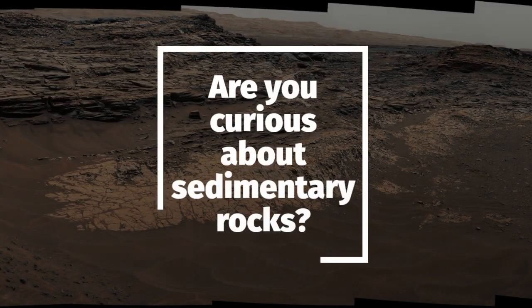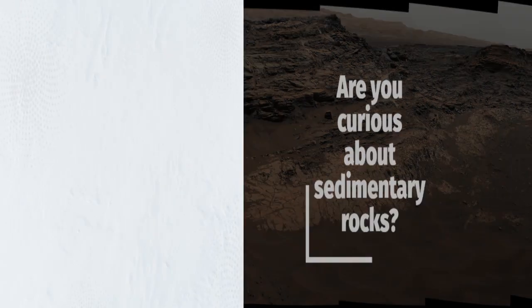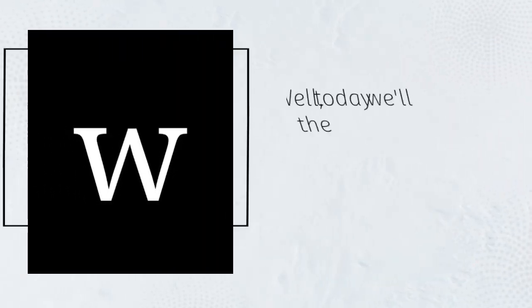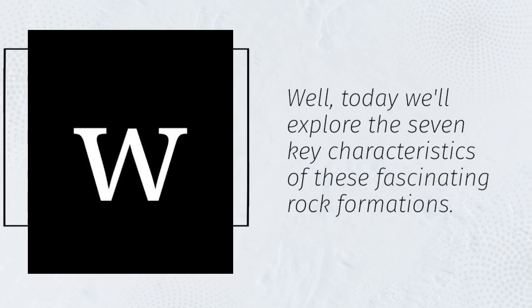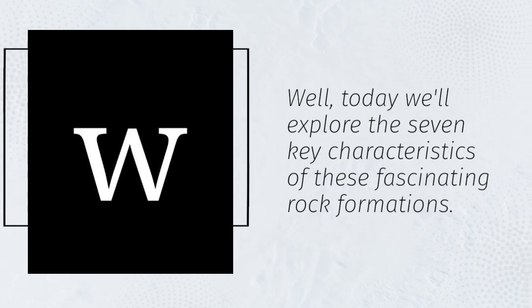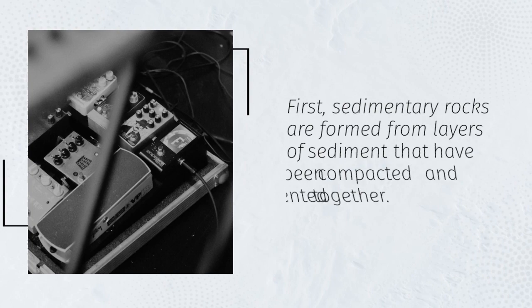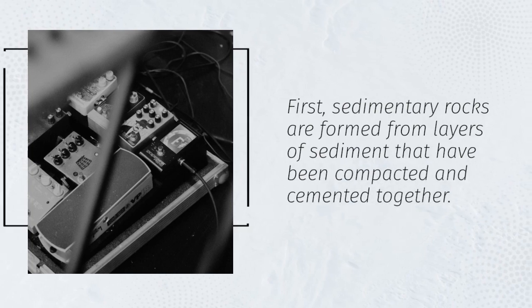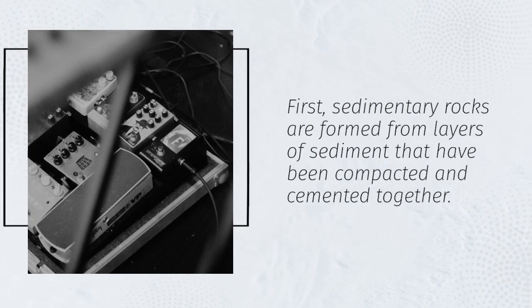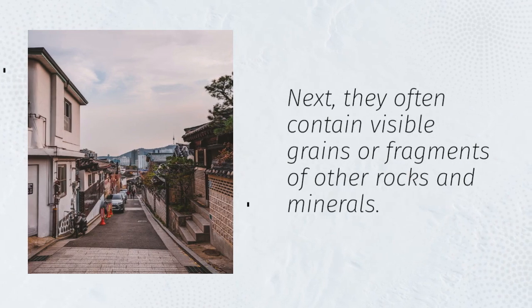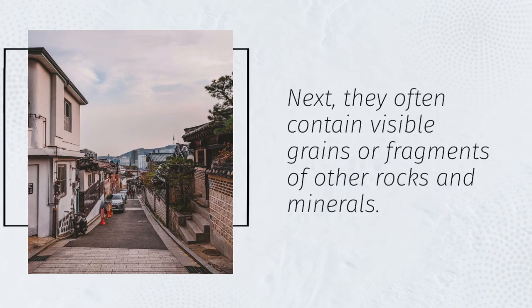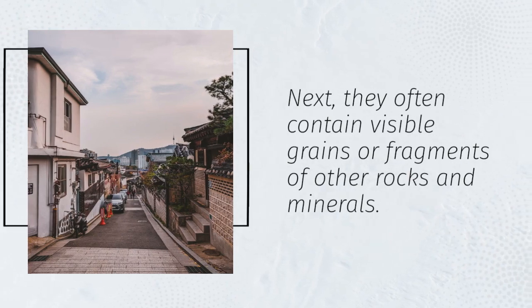Are you curious about sedimentary rocks? Well, today we'll explore the seven key characteristics of these fascinating rock formations. First, sedimentary rocks are formed from layers of sediment that have been compacted and cemented together. Next, they often contain visible grains or fragments of other rocks and minerals.